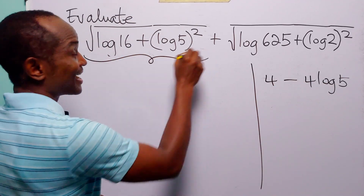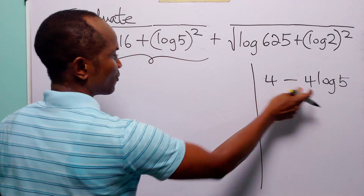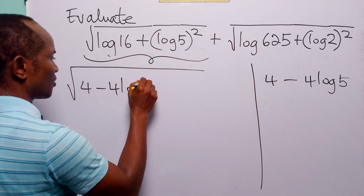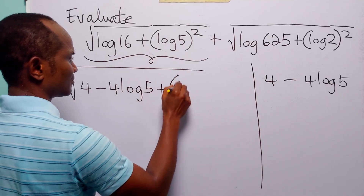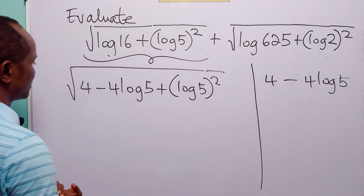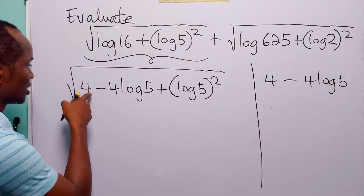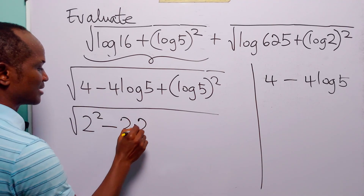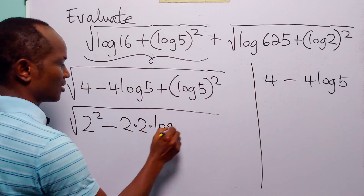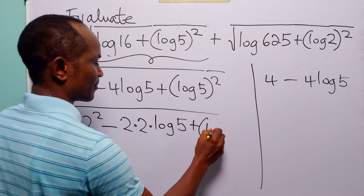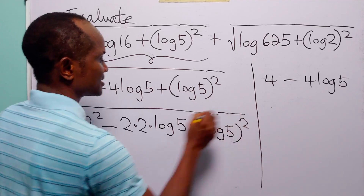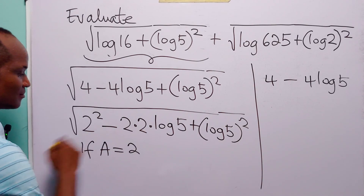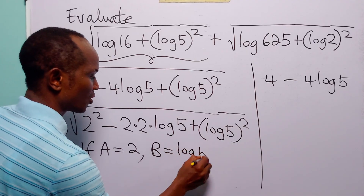Now let us look at the entire square root. We have that log 16 equals 4 minus 4 log 5, so the expression inside is the square root of 4 minus 4 log 5 plus log 5 squared. Since 4 is 2 squared, this is the square root of 2 squared minus 2 times 2 times log 5 plus log 5 squared.